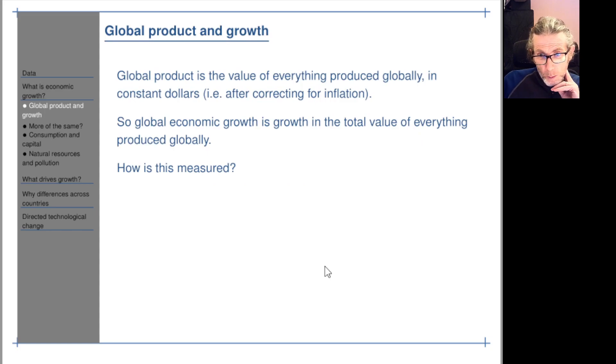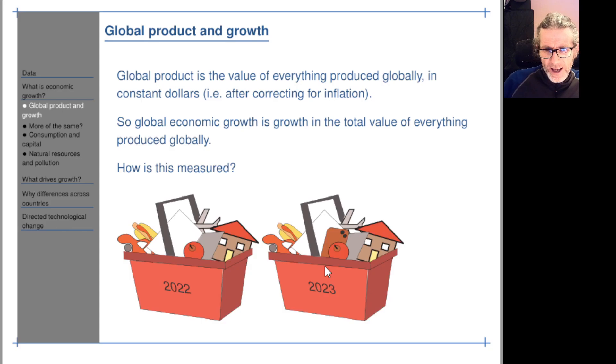So global product or GDP for a country, global product for the whole world is the value of everything produced globally in constant dollars, which means after correcting for inflation. So global economic growth is growth in the total value of everything produced globally. But what do we mean by value? How is that measured?